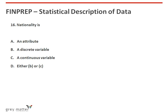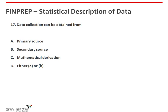Sixteenth question: nationality is treated as an attribute. So the answer is option A. Seventeenth question: data collection can be obtained from primary source or secondary source. So the answer is D option, which says either A or B.